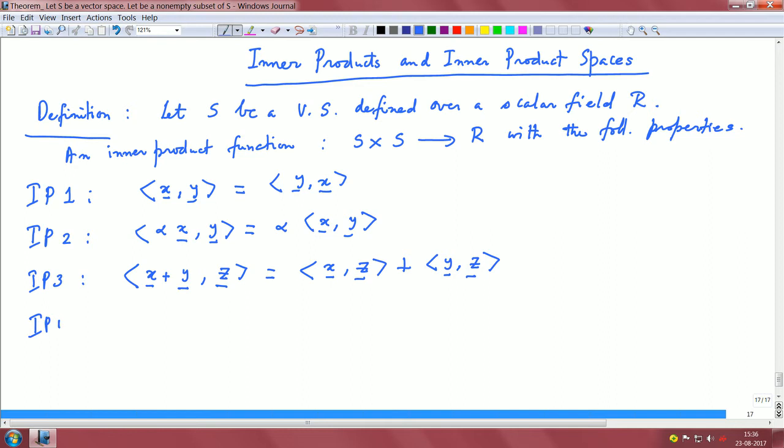We have the last property. The inner product of a vector with itself is greater than 0 for all x which is not the null vector, and it is 0 if and only if the vector itself is a null vector. These are the properties for an inner product function.